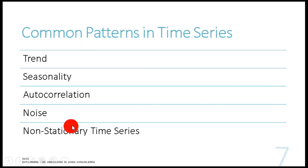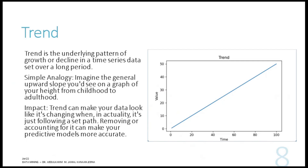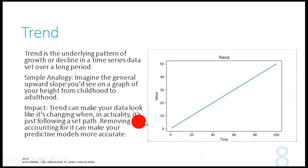The patterns or characteristics of time series include trend, seasonality, auto-correlation, noise, and non-stationary behavior. Trend simply refers to the underlying pattern of growth or drop in value over time. If you look at a figure where the x-axis is time and the y-axis is total sales, and as time increases the number of sales also increases, that means there is an upward trend. You can think of it like the general upward slope on a graph of your height from childhood to adulthood.